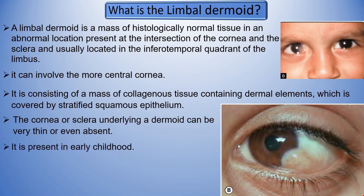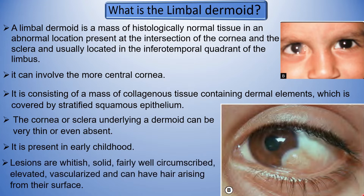It is present in early childhood. Lesions are whitish, solid, fairly well circumscribed, elevated, vascularized, and can have hair arising from their surface. Lesions are occasionally very large and may virtually encircle the limbal dermoid.